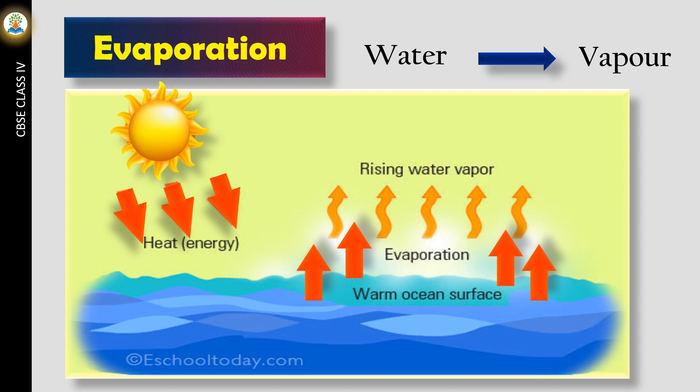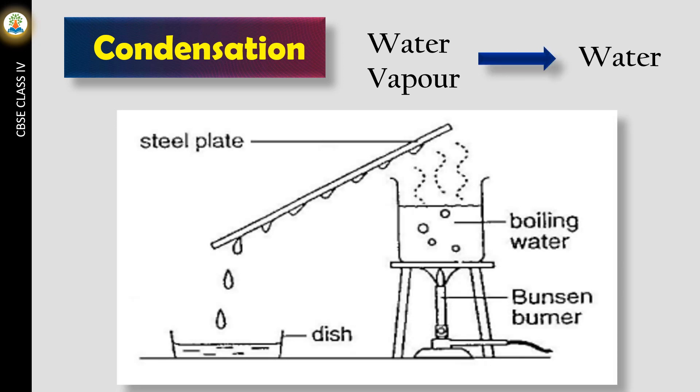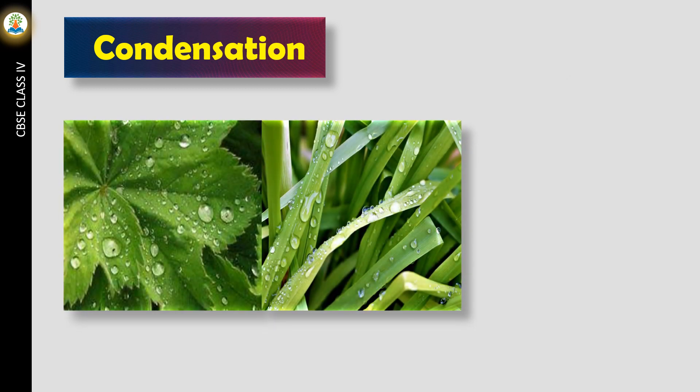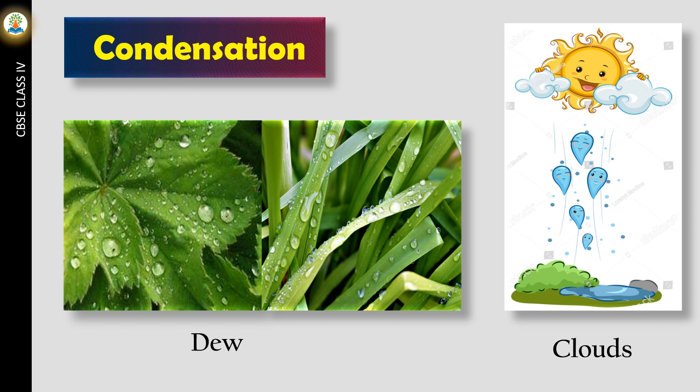The process of changing water vapor into water is called condensation. When we boil water in a beaker and hold a cold plate above it, water drops are collected on the surface of the plate facing the steam. These water drops are collected due to condensation. Drops of water collected on grass and leaves on cold winter mornings are called dew, which are formed due to condensation. Clouds are formed due to the condensation of tiny water droplets that become bigger and fall as rain.